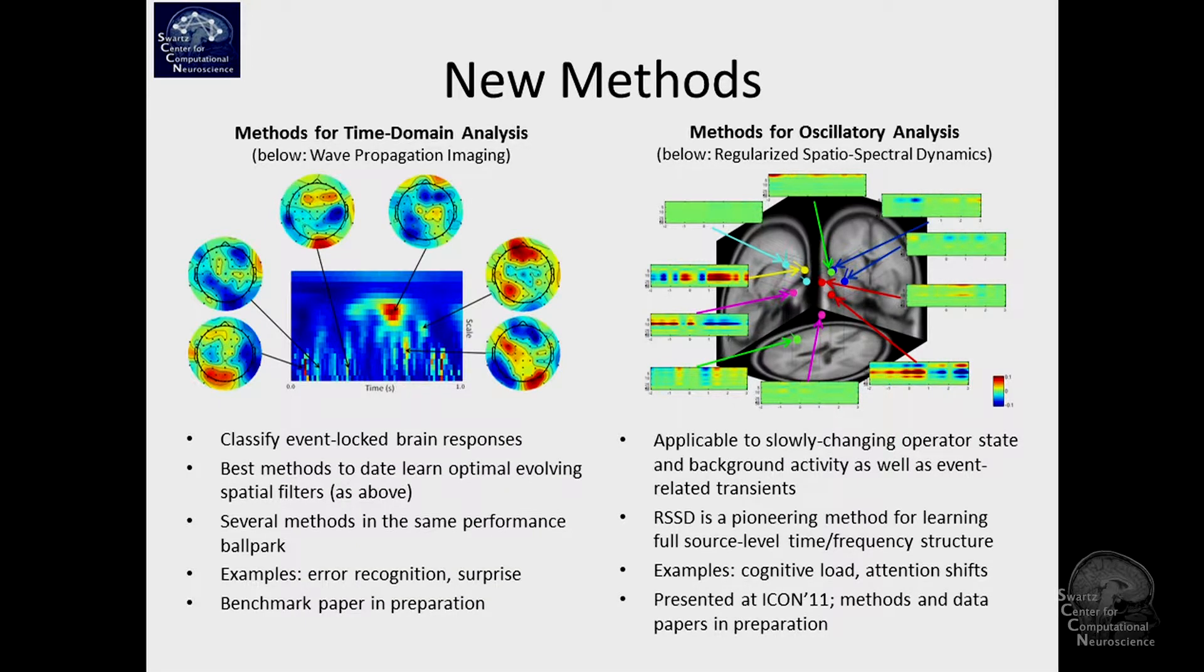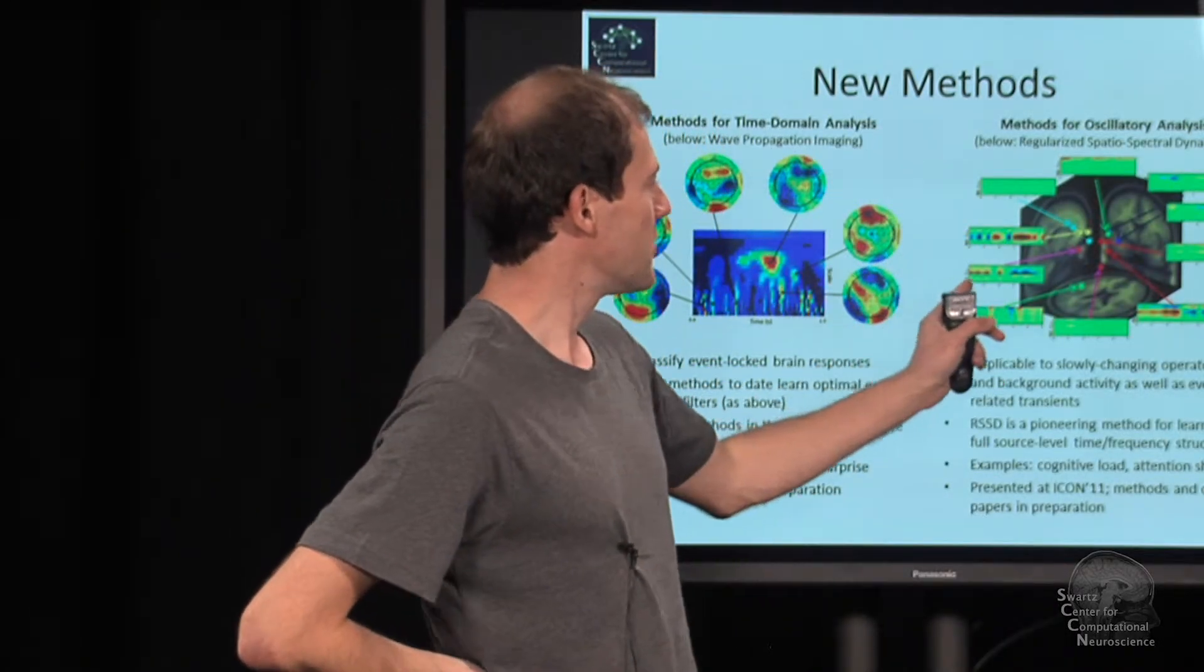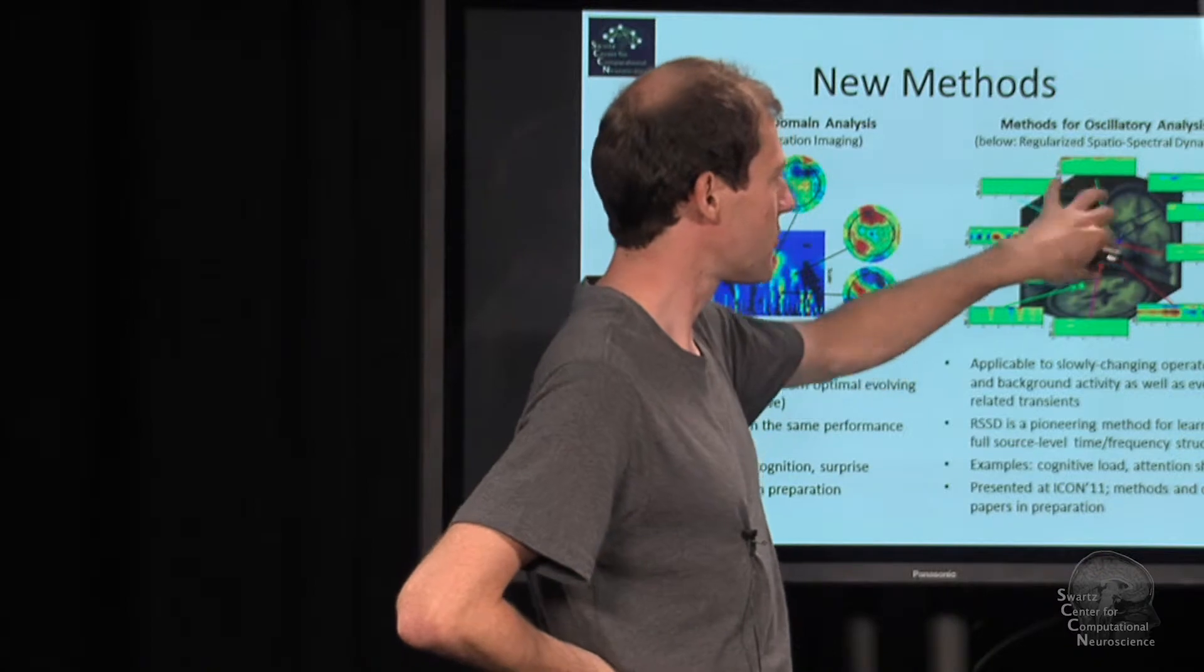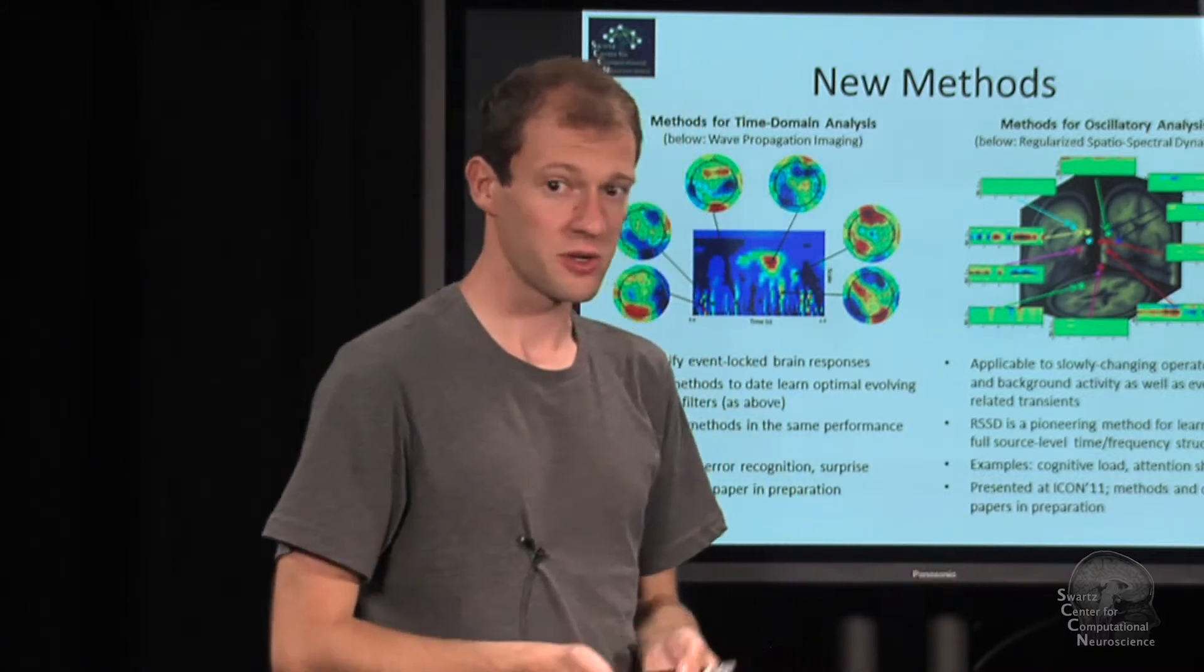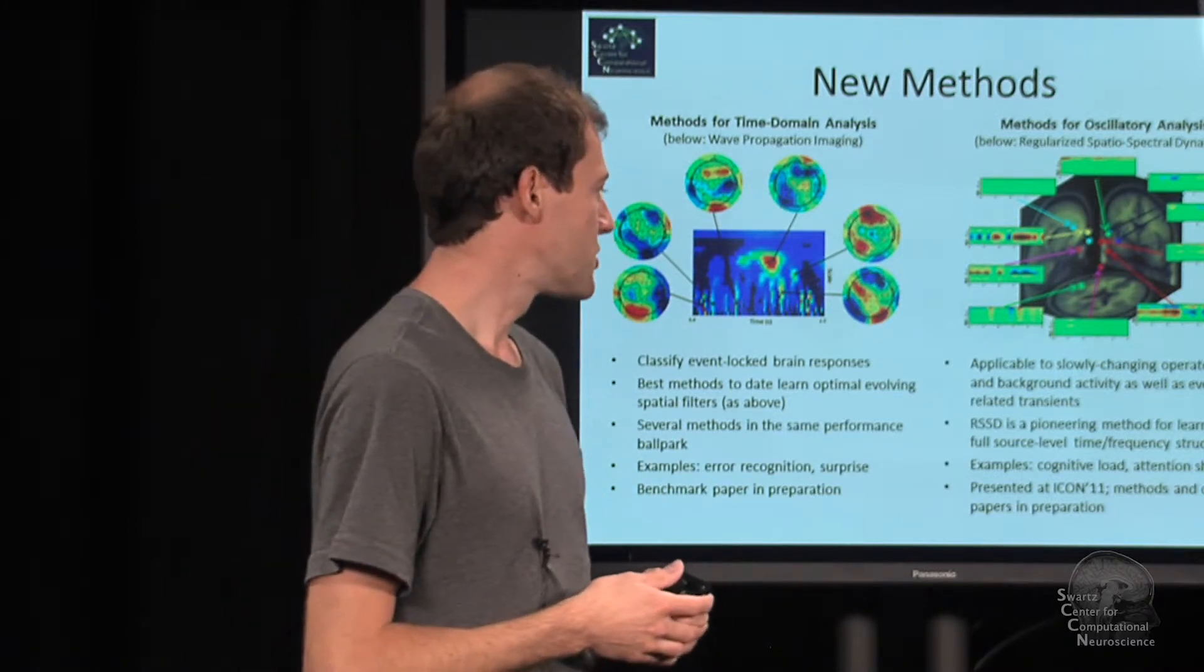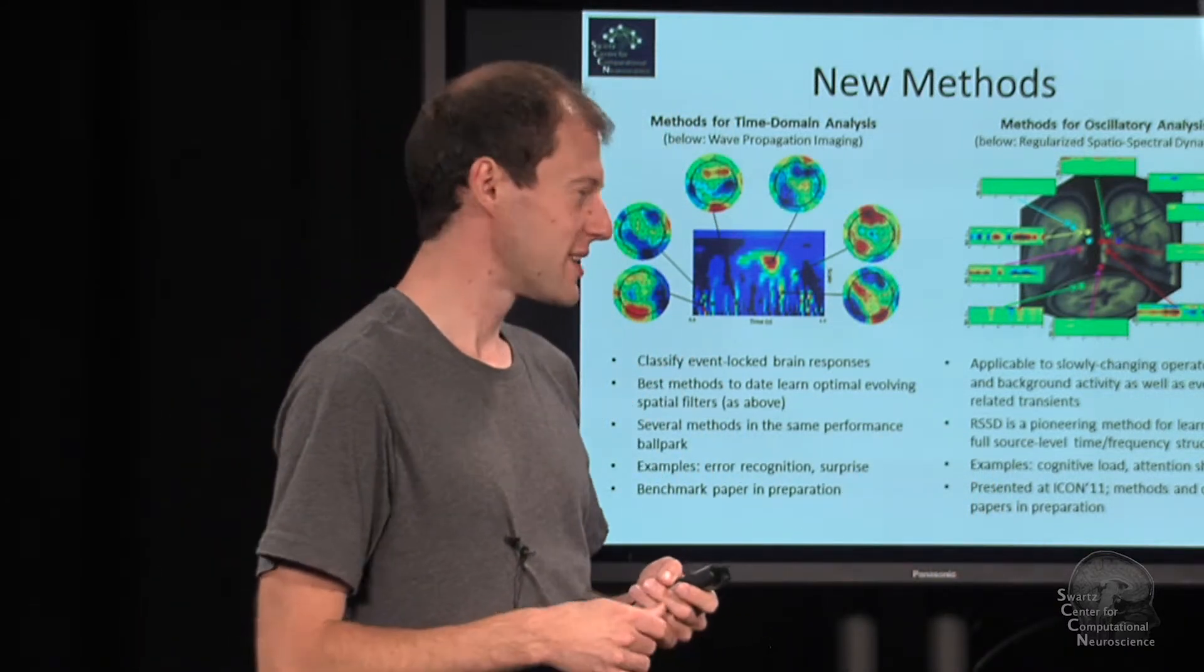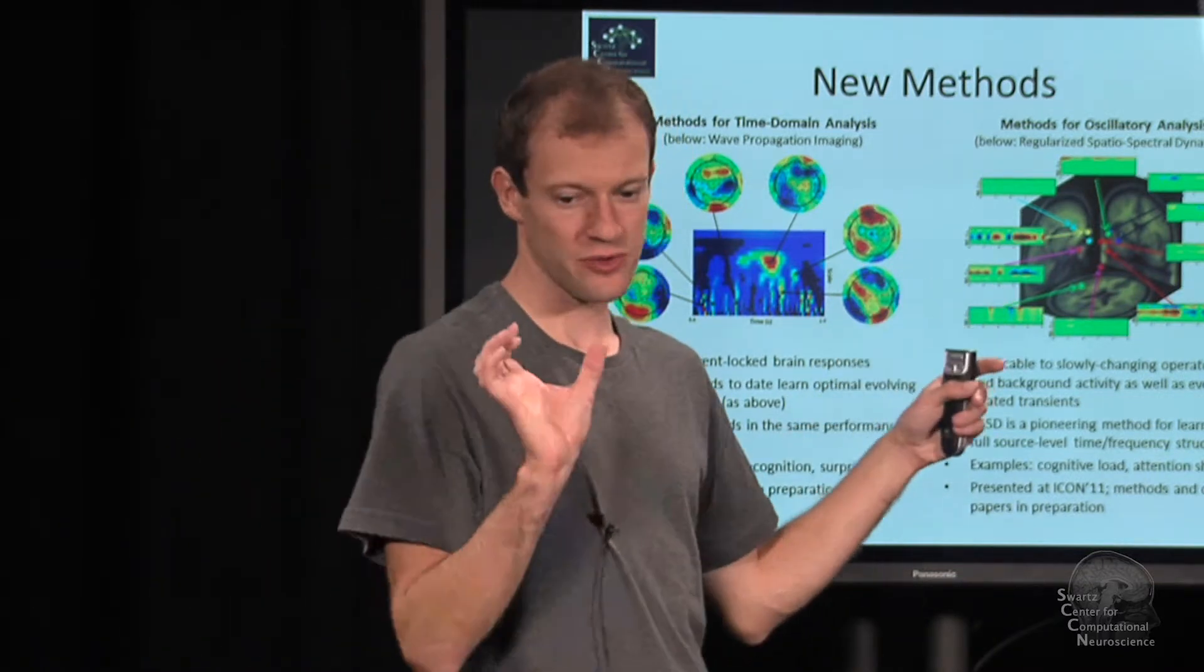For oscillatory processes we also have another method which is new, coming out in version 1.02. It learns simultaneously when things happen in time, where in frequency, and also where in space, plus the number of processes that are relevant. That's called regularized spatial spectral dynamics, or RSSD. It's pretty slow to train—it takes on the order of five to ten hours if you do cross-validation and everything.